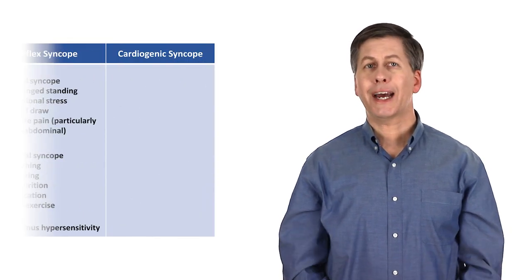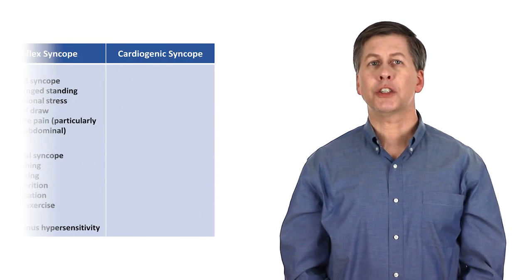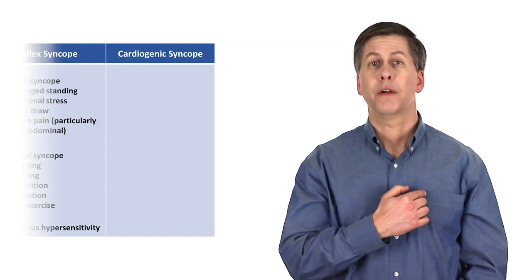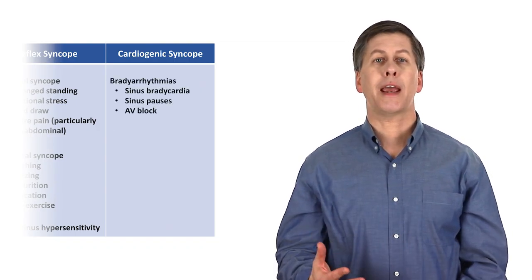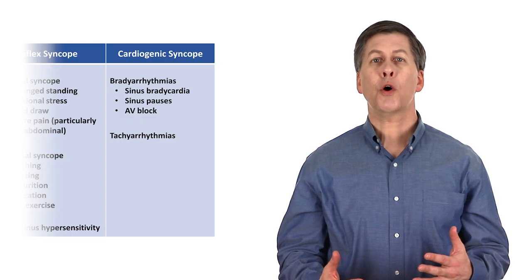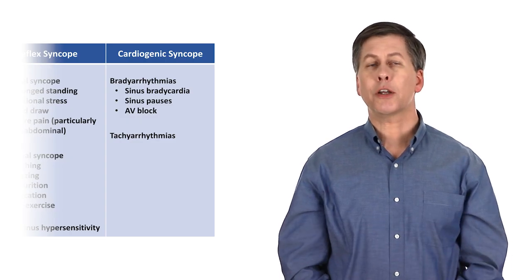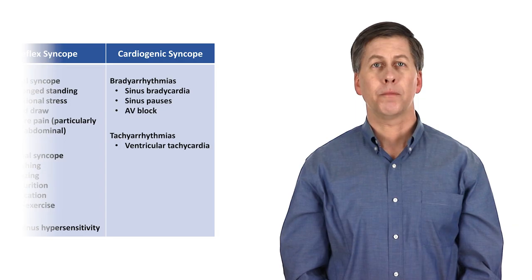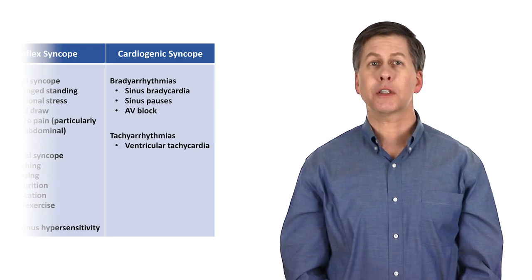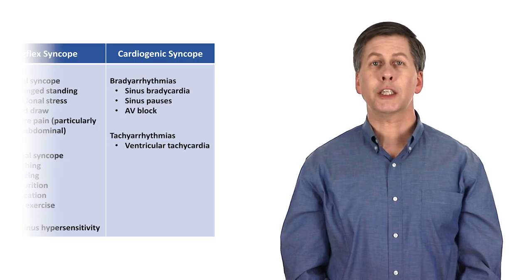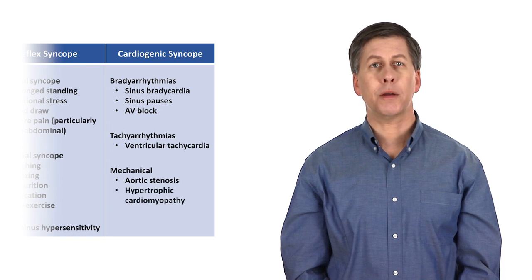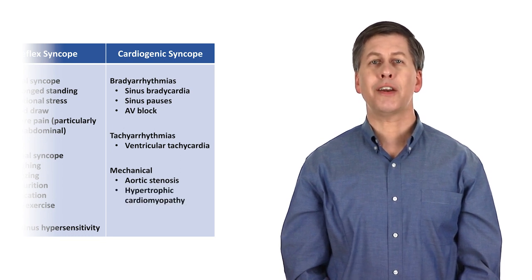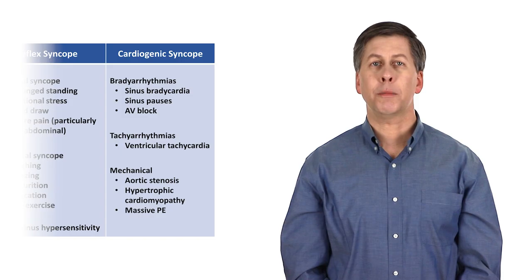Cardiogenic syncope is a category which includes all etiologies that arise from within the heart. These include both bradyarrhythmias and tachyarrhythmias, although the only tachyarrhythmia that commonly causes syncope is ventricular tachycardia. Most other tachyarrhythmias typically present with palpitations instead. Cardiogenic syncope also includes mechanical etiologies such as aortic stenosis and hypertrophic cardiomyopathy, and includes the miscellaneous etiology of massive pulmonary embolism.